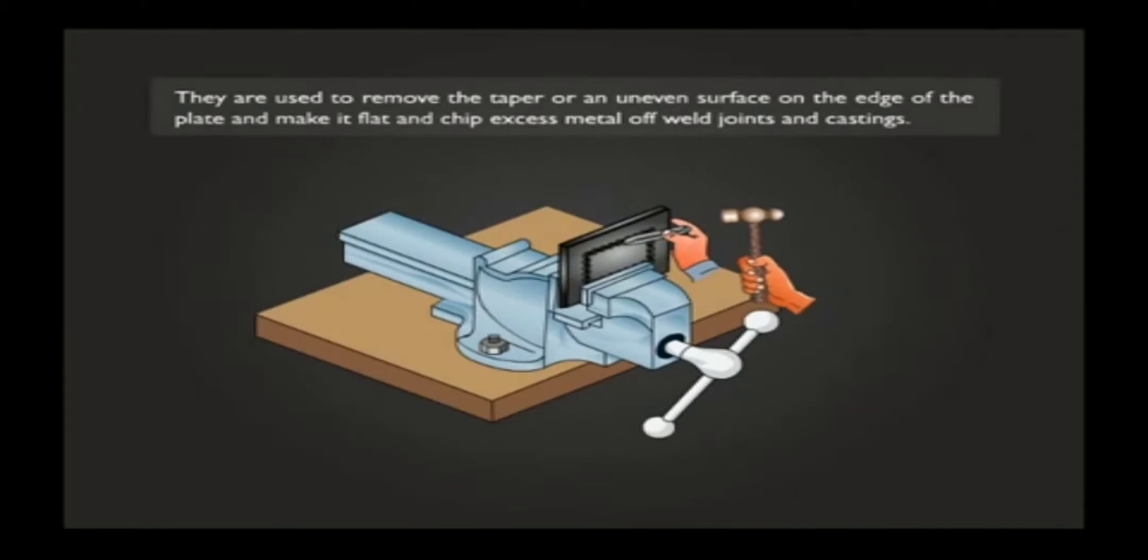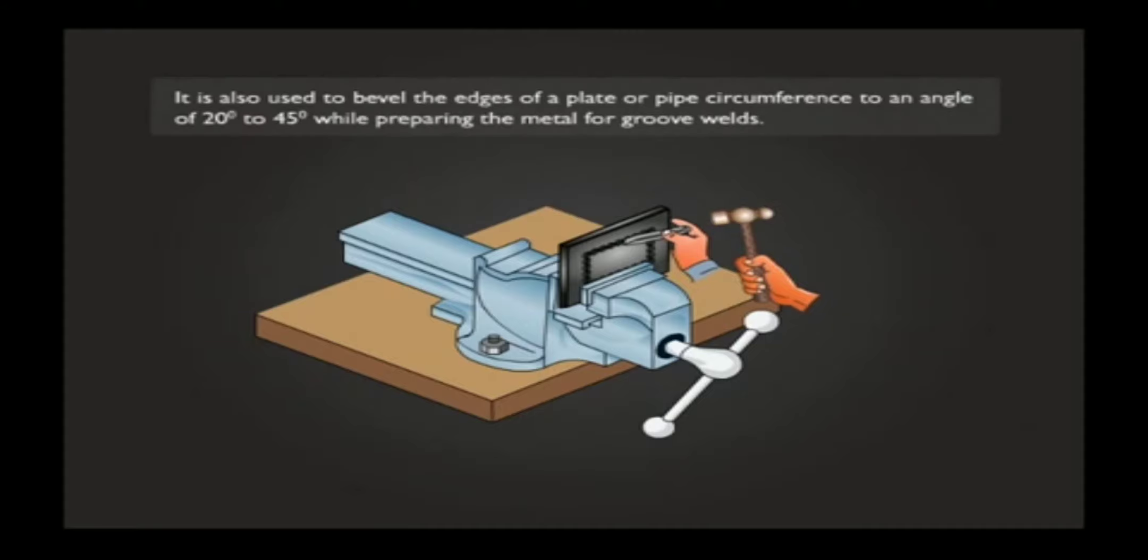Flat chisels are used to remove the taper or an uneven surface on the edge of the plate and make it flat and chip excess metal off weld joints and castings. It is also used to bevel the edges of a plate or pipe circumference to an angle of 20 to 45 degrees while preparing the metal for groove welds.